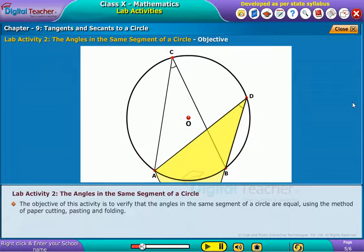The objective of this activity is to verify that the angles in the same segment of a circle are equal using the method of paper cutting, pasting and folding.